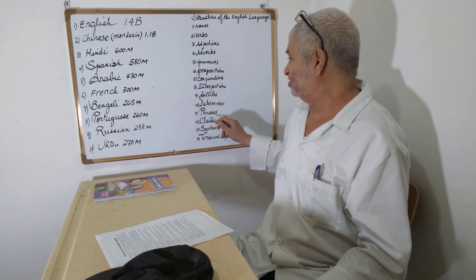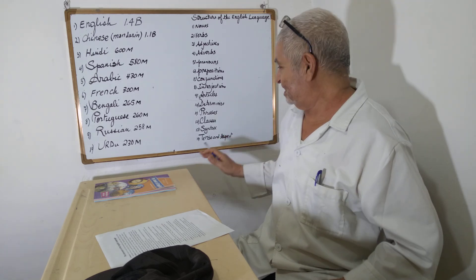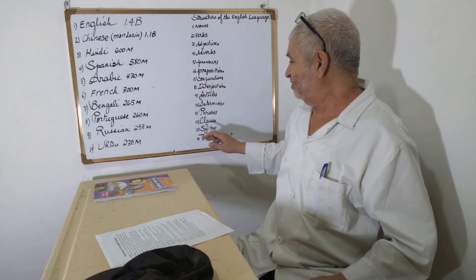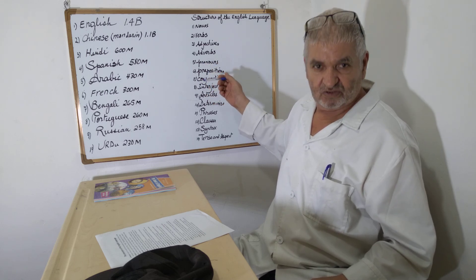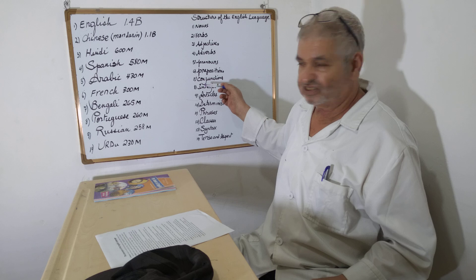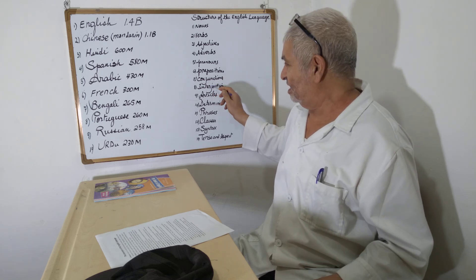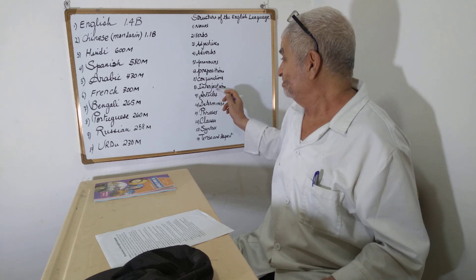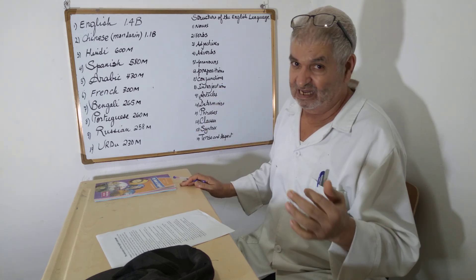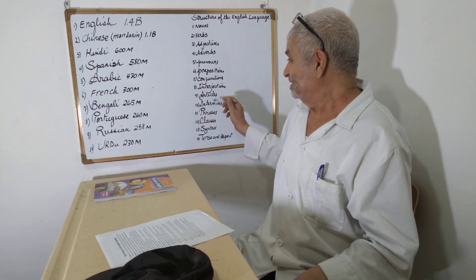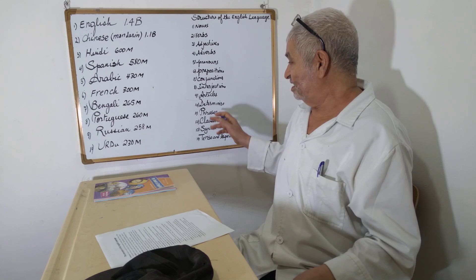Then come the rest of the parts of speech: pronouns, prepositions, conjunctions, and interjections — there are only a few of those, like 'oh' etc. Then you have articles — there are only three: 'the,' 'a,' and 'an,' definite and indefinite. And determiners, which also have only a few forms.